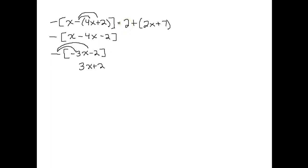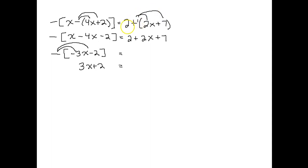That's all I can do on the left side for now. On the right side, there are just parentheses. Inside, I have 2x plus 7, which won't simplify. In front of the parentheses is a plus sign — distributing a plus 1 — so it becomes plus 2x plus 7. Then combining like terms, the plus 2 and plus 7 combine to give plus 9, so the right side is 2x plus 9.